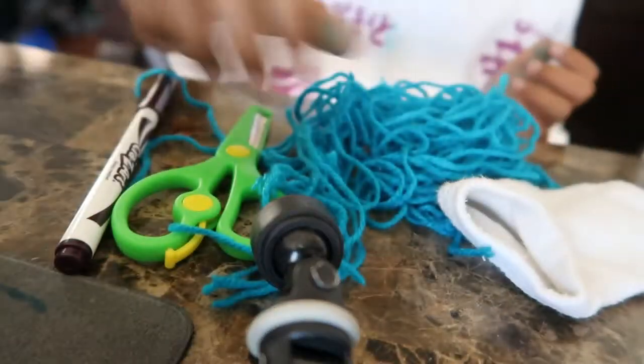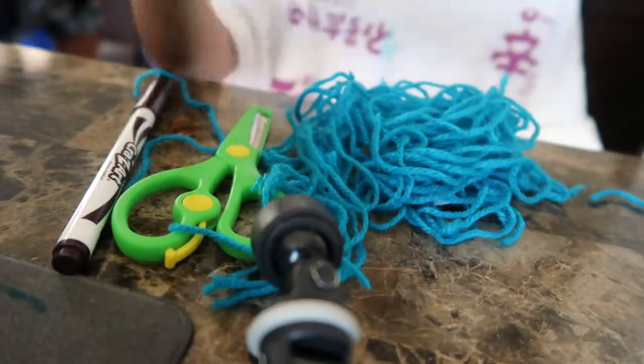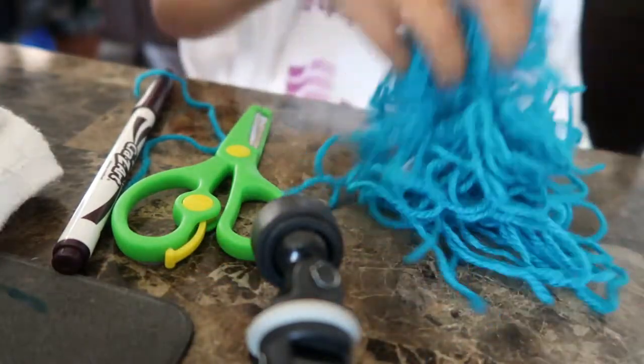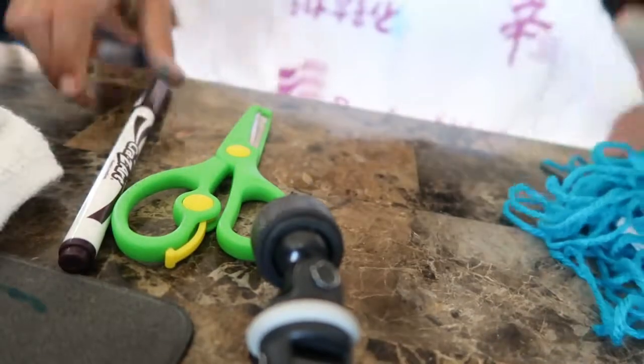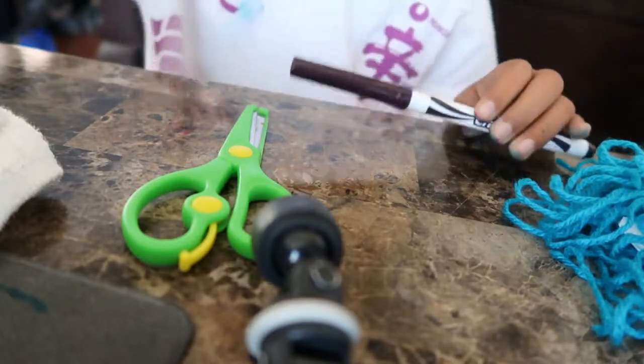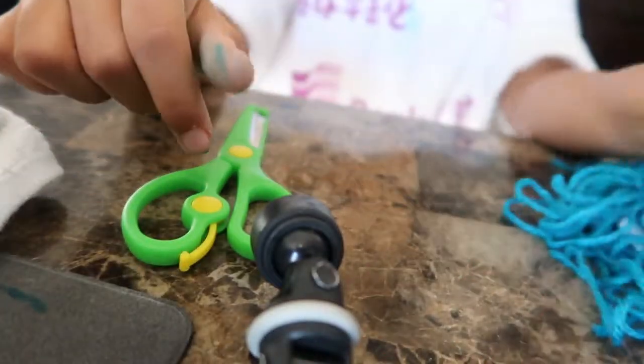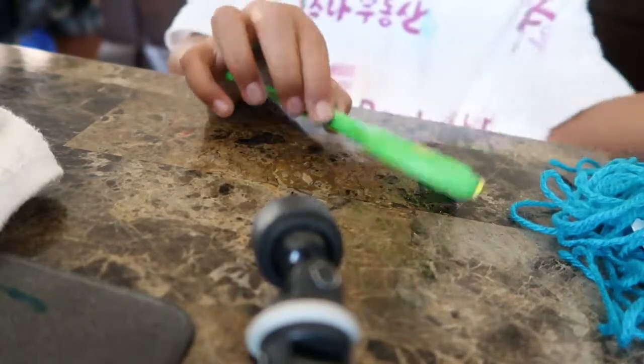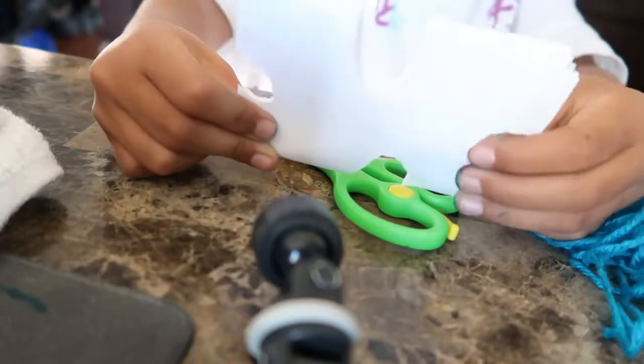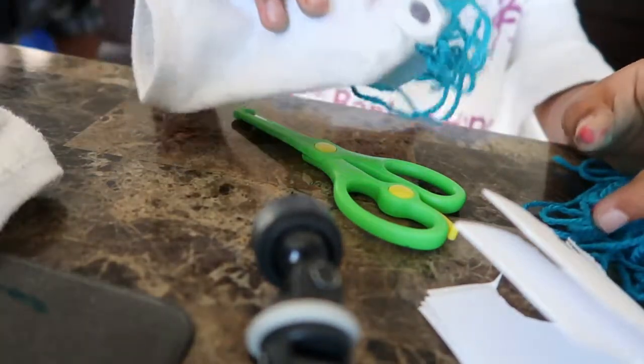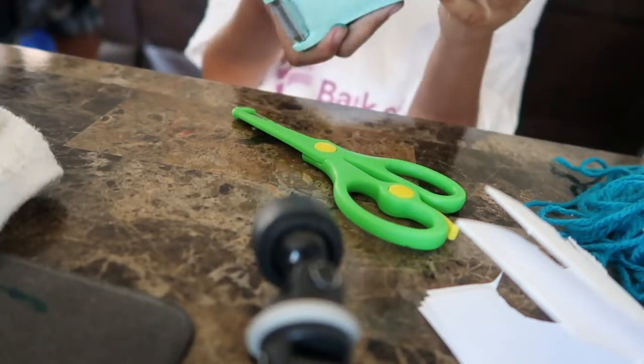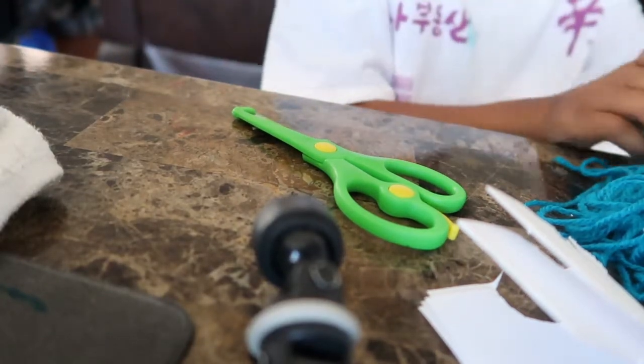Okay, so what you'll be needing to make this puppet is a white sock, any colored yarn, a black marker and a red marker, some scissors, and paper to make this. You're gonna need some scotch tape too.